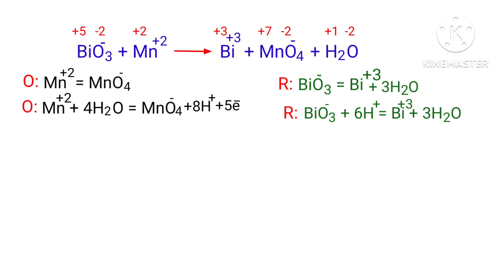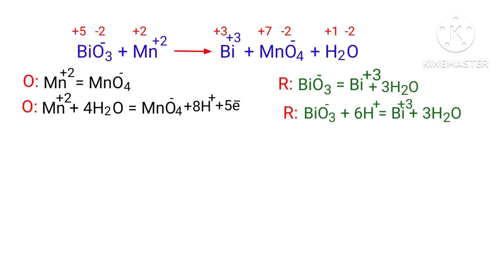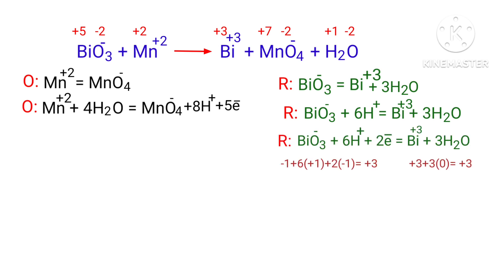Now balance the charges in the reduction half-reaction. Both sides are not equal, so add 2 electrons to the left side to make it equal to +3. Now the charges are equalized in the reduction half-reaction.